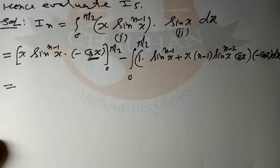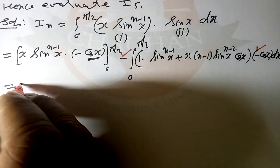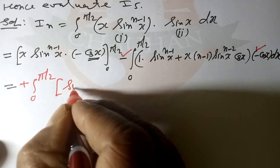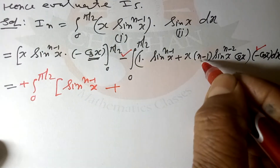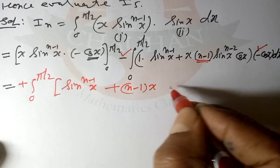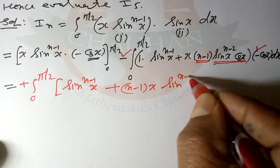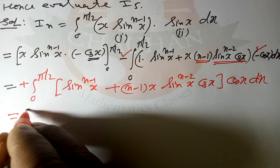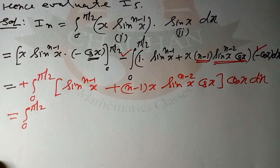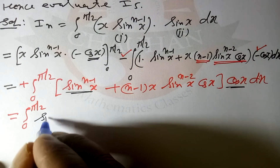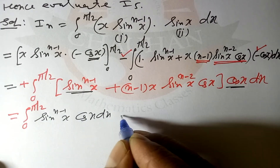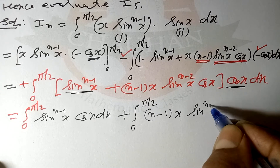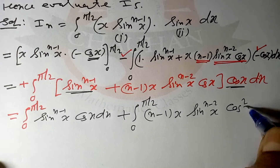Replacing x by π/2 gives cos(90°) = 0; replacing x by 0 gives 0. So the boundary term vanishes. Going to the second integral, minus times minus gives plus: ∫₀^(π/2) sin^(n-1)(x)·cos(x) dx plus (n-1)∫₀^(π/2) x·sin^(n-2)(x)·cos(x)·cos(x) dx.